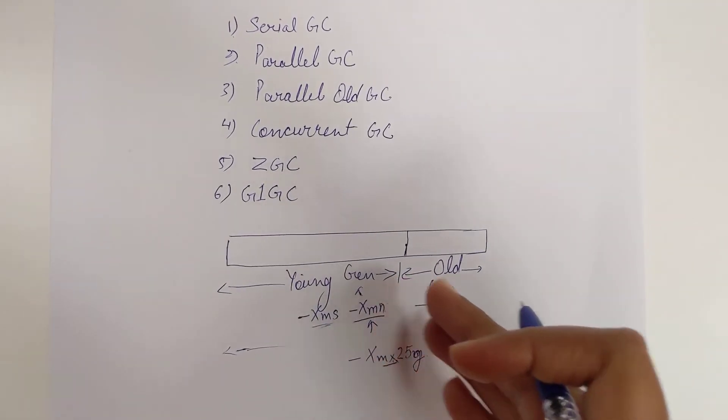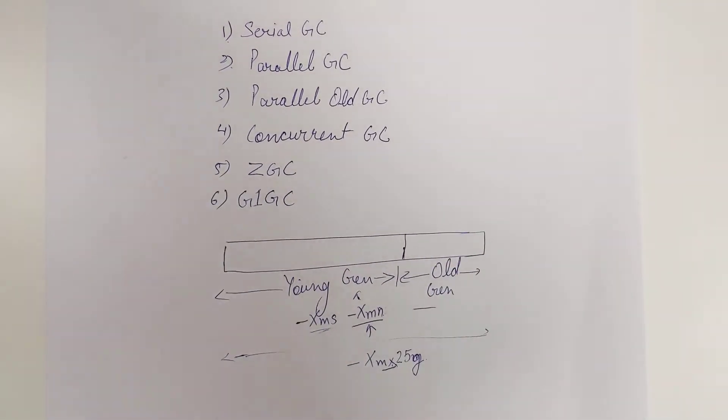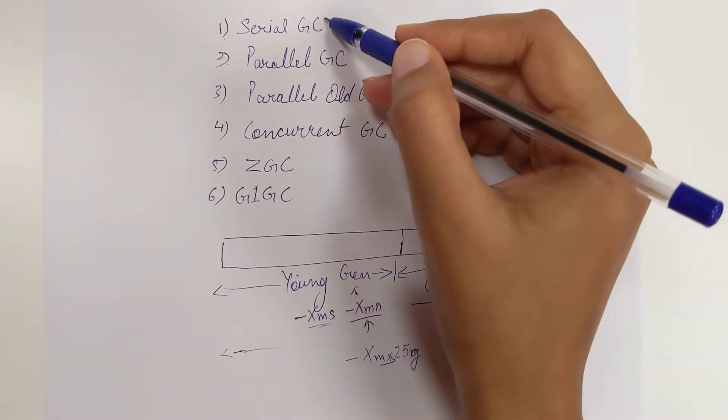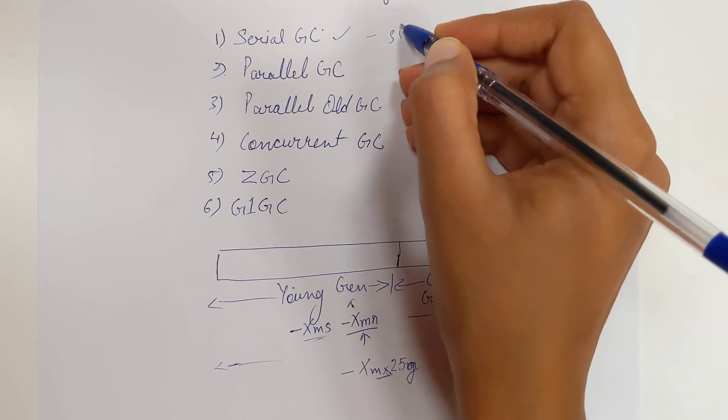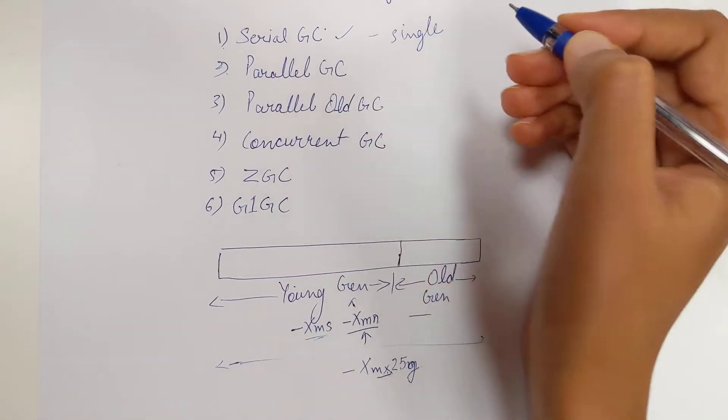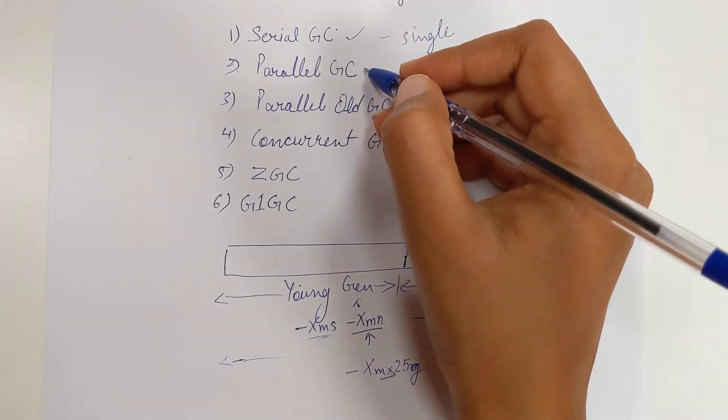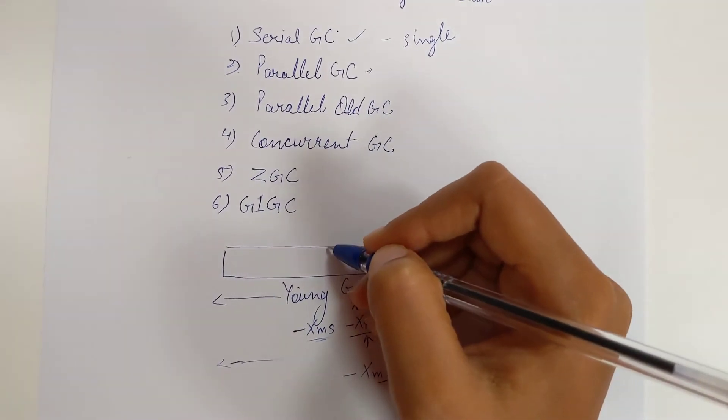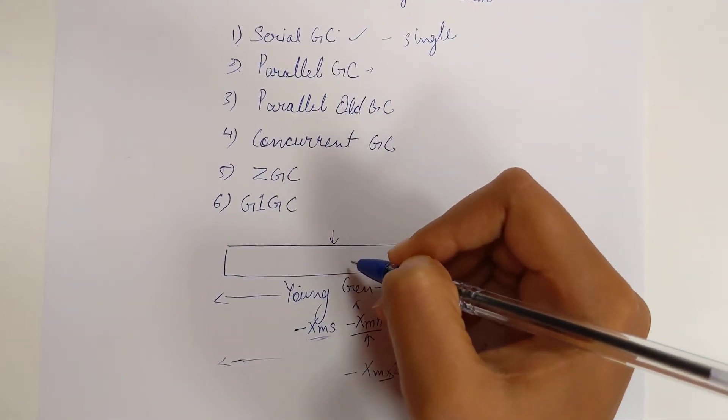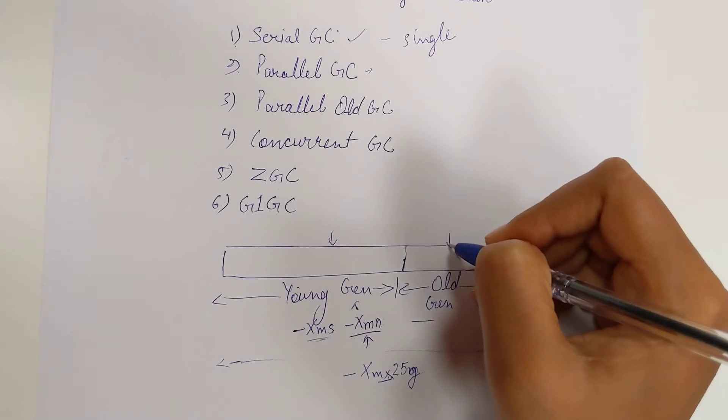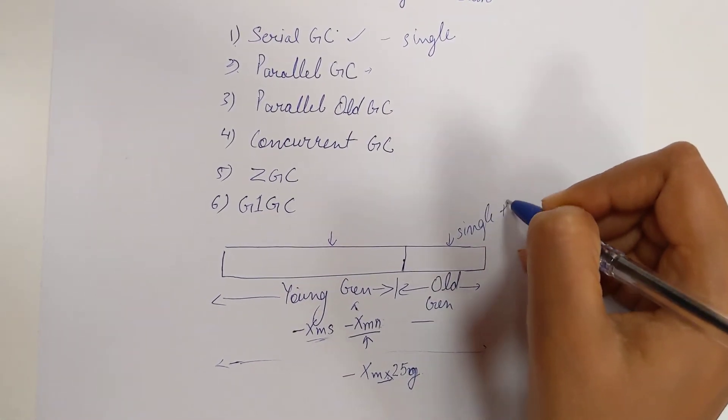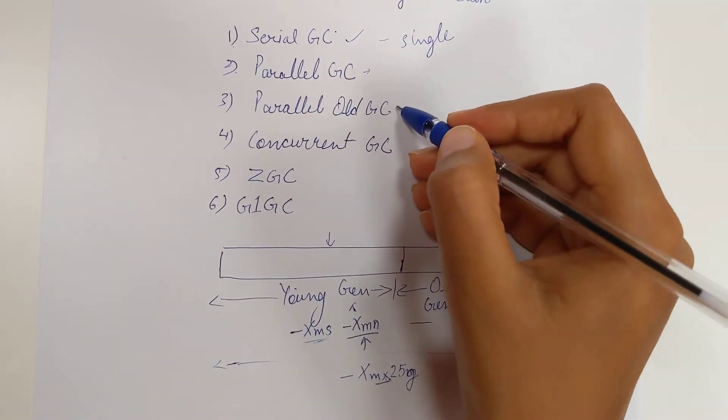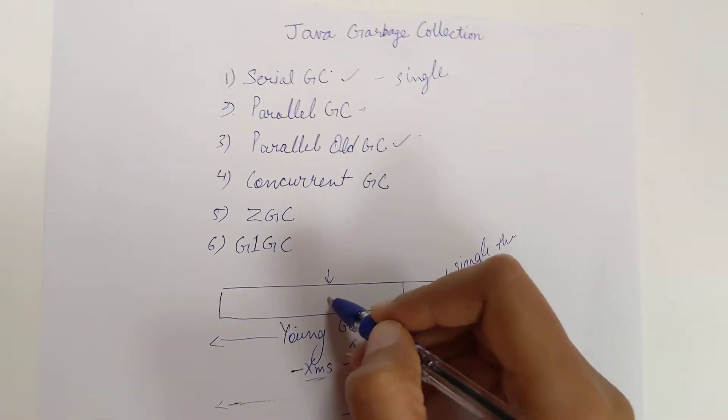In Serial GC, a single thread does the garbage collection job. In Parallel GC, only the young generation garbage collection happens in parallel, and old gen runs single-threaded. In Parallel Old GC, both generations are done in parallel.